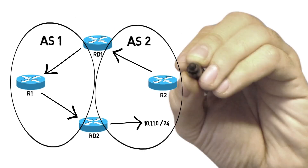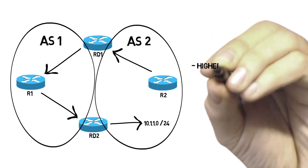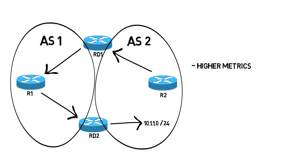What we could do is set really high metric values on a route being redistributed into a routing domain. That way, if I'm in autonomous system number two and I'm trying to send packets to a destination that also lives in autonomous system number two, I'm probably not going to be leaving my autonomous system because the metric would be too high to go through another autonomous system. It would be a much lower metric to stay within my own autonomous system.